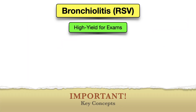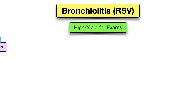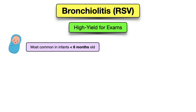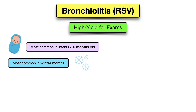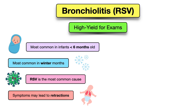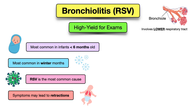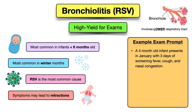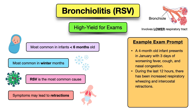Here are the key concepts for your exams: Bronchiolitis most commonly occurs in infants less than six months old and typically in children less than two years old. It is common in the winter months. RSV is the most common cause. Symptoms may lead to retractions. Bronchiolitis involves the lower respiratory tract, especially the bronchioles. A sample exam question might describe a four-month-old infant presenting in January with three days of worsening fever, cough, and nasal congestion, and increased respiratory wheezing and intercostal retractions in the last 12 hours — the key clues being age, January presentation, and those symptoms on exam, pointing toward bronchiolitis with RSV as a possible cause.